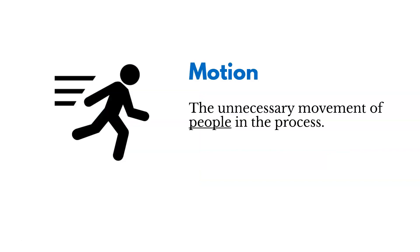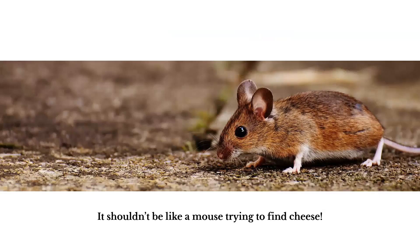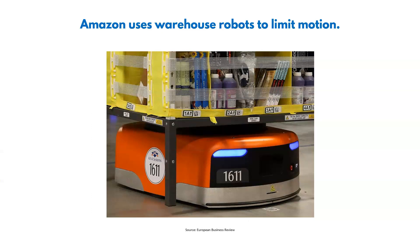Then there's the waste of motion — the unnecessary movement of people in the process. Think about all the time you waste throughout your life trying to find your car parked in a mall or some other store. We want to avoid having to move around to find things or get a process done — it shouldn't be like a mouse trying to find cheese. One way Amazon addresses this is by using warehouse robots: rather than employees going to a shelf to pick an item, these robots bring the items to the employee, allowing them to store more inventory and ship more packages.